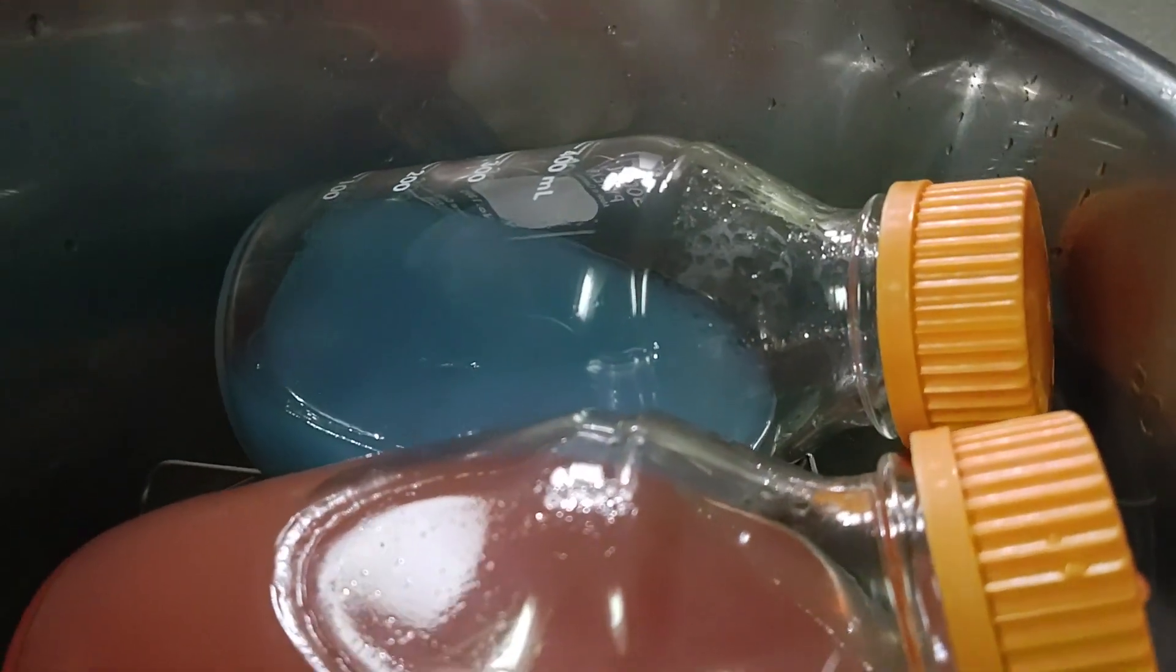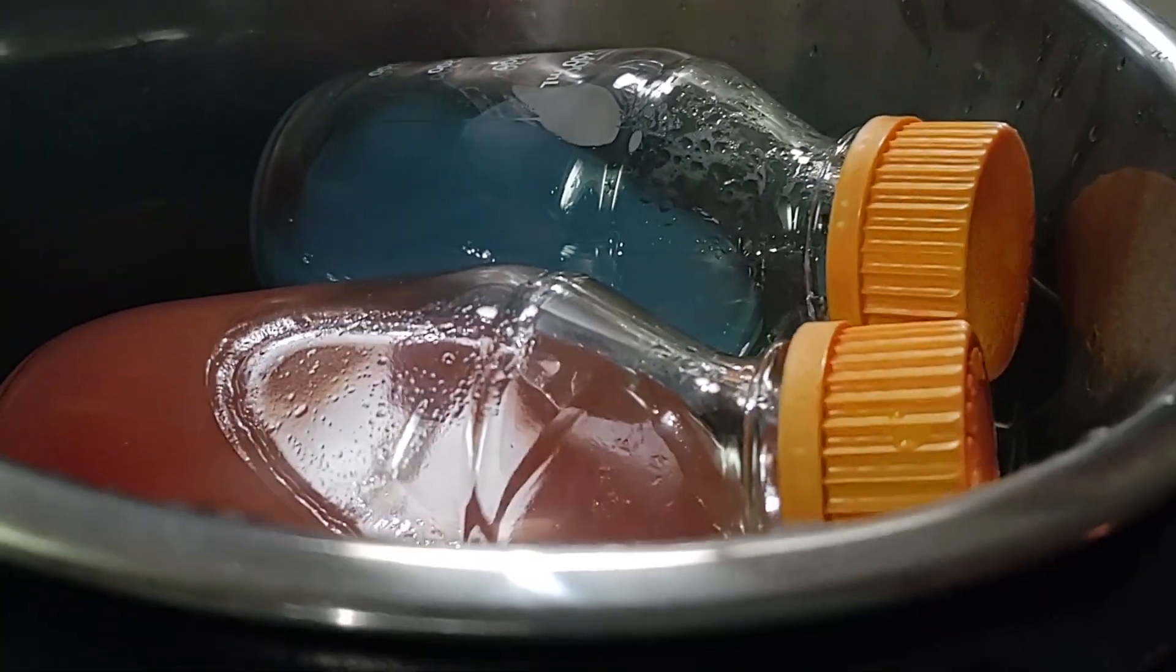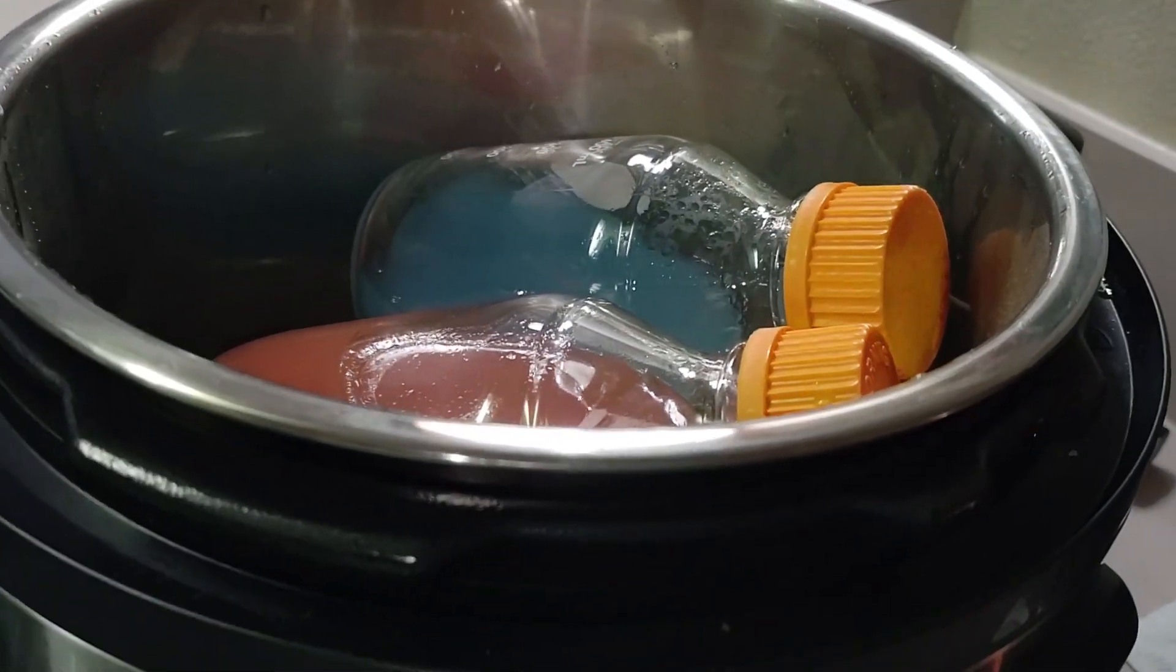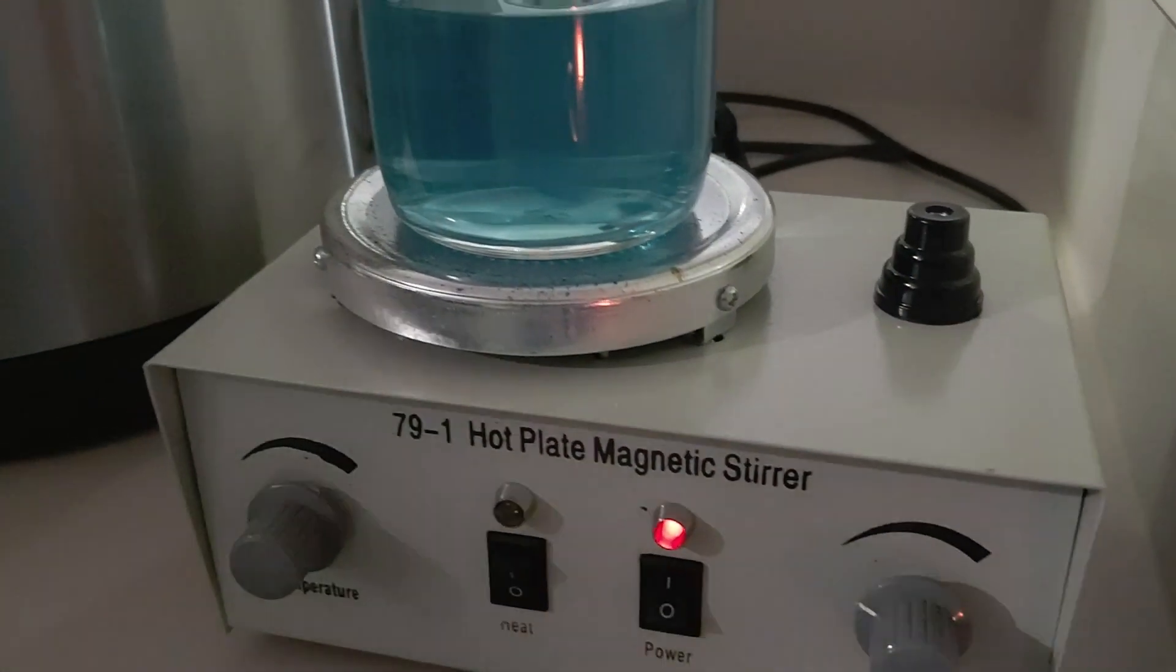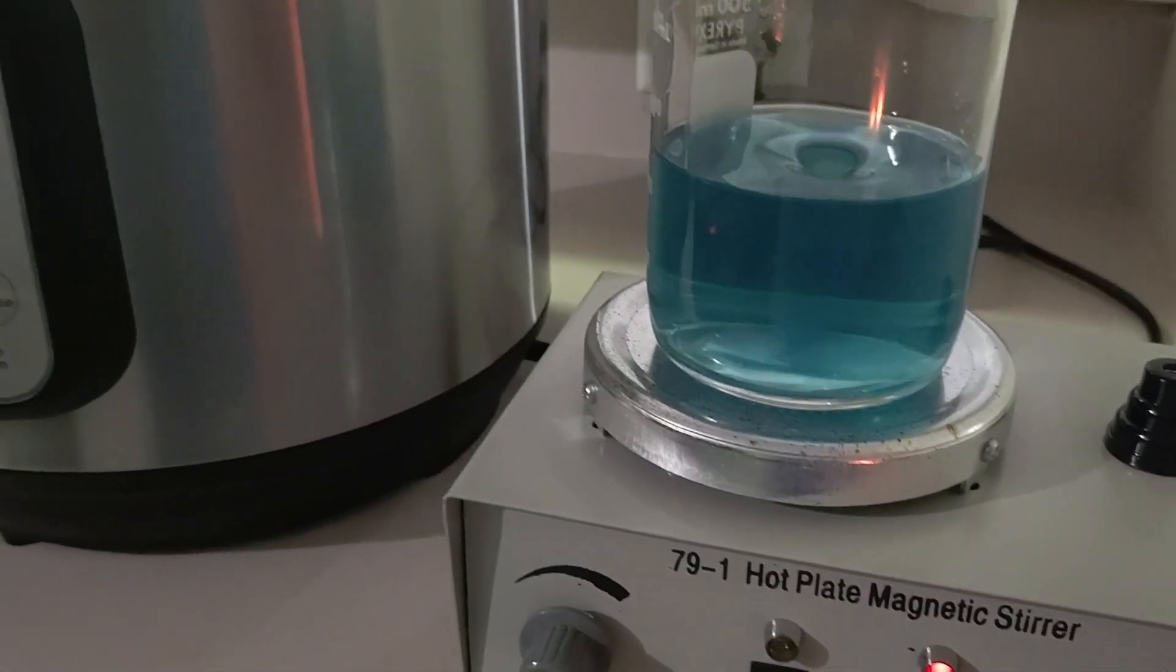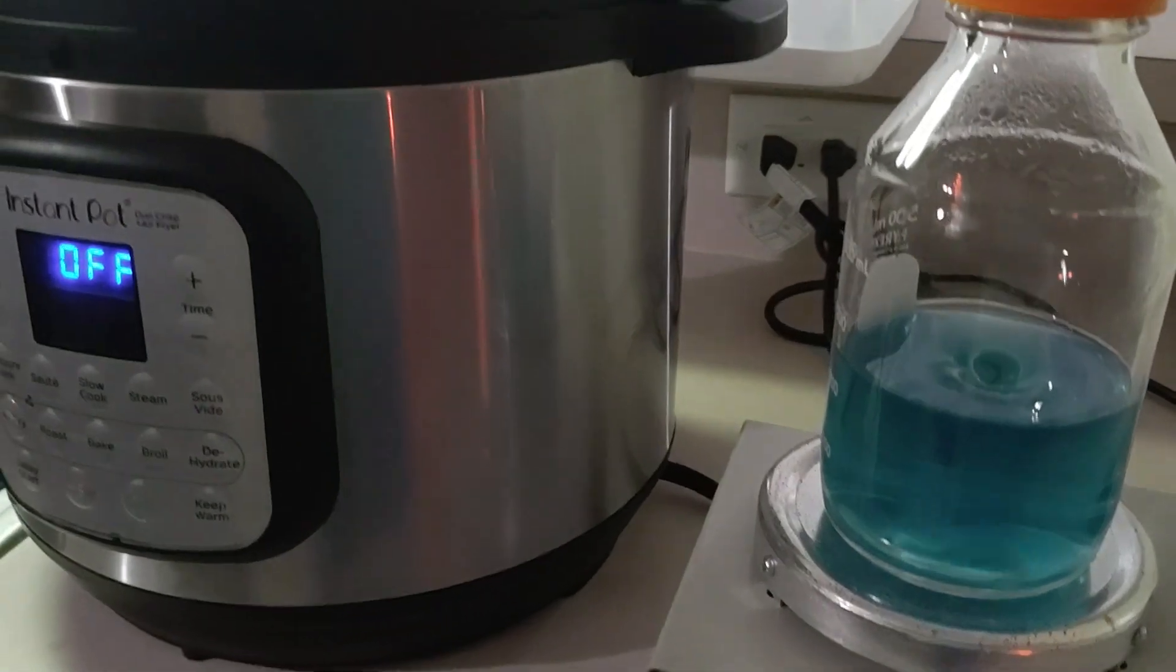You will want to pressure cook for 20 minutes at 15 psi then allow the bottles to cool between 140 and 120 degrees before pouring your dishes.